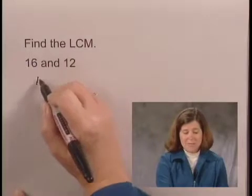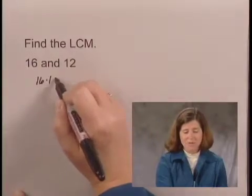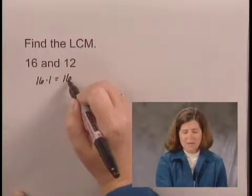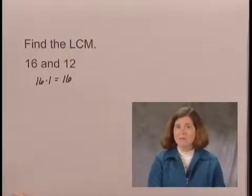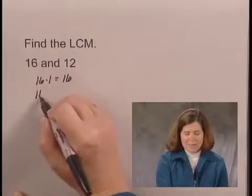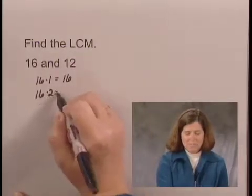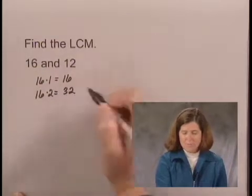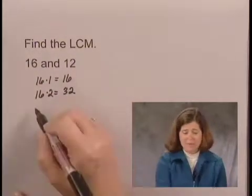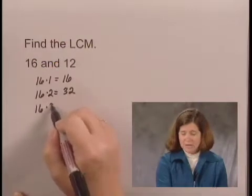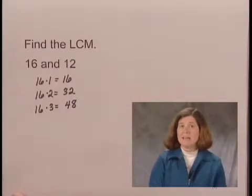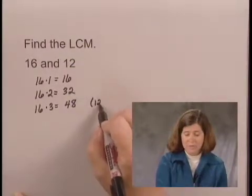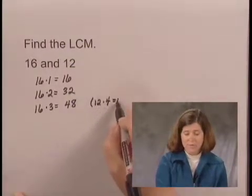We can start with 16 times 1, which we already checked — that's 16. 16 is not a multiple of 12, so 16 can't be the least common multiple. Let's check 16 times 2, that's 32. 32 is not a multiple of 12. 16 times 3 is 48, and 48 is a multiple of 12, since 12 times 4 equals 48.